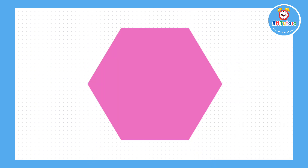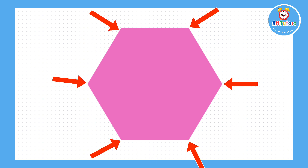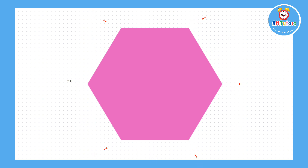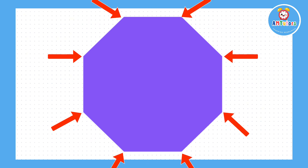The next shape is a hexagon. A hexagon has six sides and six corners. And finally, here's an octagon. An octagon has eight sides and it also has eight corners.